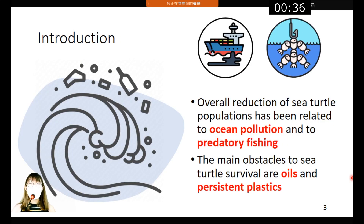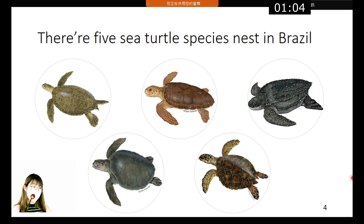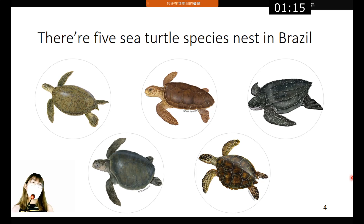I assume everyone has a brief idea of ocean pollution. Unfortunately, the overall reduction of sea turtle populations has been directly or indirectly related to ocean pollution and to predatory fishing. The marine pollution is mainly oil and persistent plastics, which may have an impact on the survivorship of sea turtles. The researchers chose Brazil as their research location because there are five different species of sea turtle that nest there.